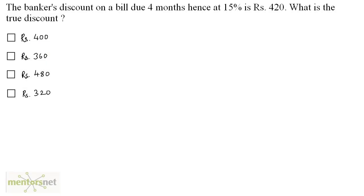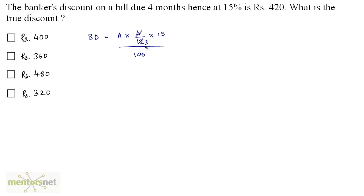The banker's discount on a bill due 4 months hence at 15% is Rs. 420. What is the true discount? The banker's discount is the simple interest calculated on the amount for the unexpired time. I can write it as A × N × R / 100, where N is 4 months, written as 4/12 years, and the rate is 15%. Simplifying: 4 × 3 = 12, and 3 × 5 = 15.